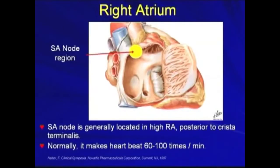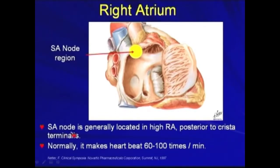First, we will discuss the right atrium. The sinoatrial node region is in the right atrium. It is generally located in the high right atrium posterior to the crista terminalis. Normally, it makes the heart beat 60 to 100 times per minute.